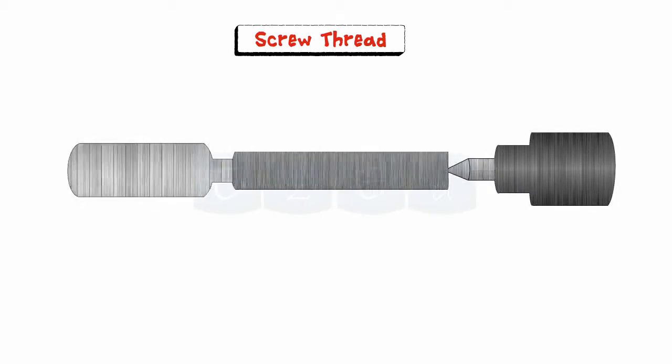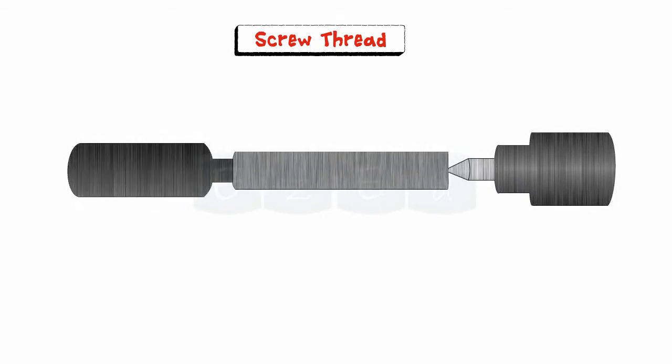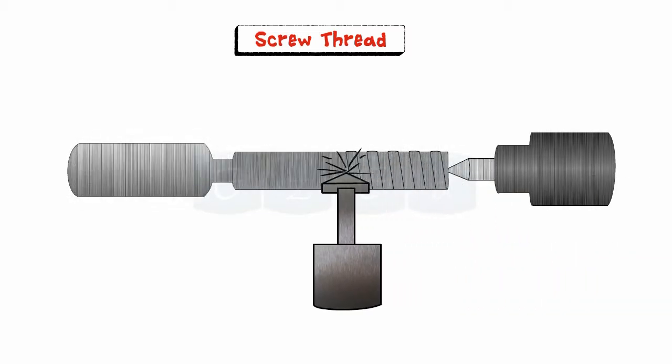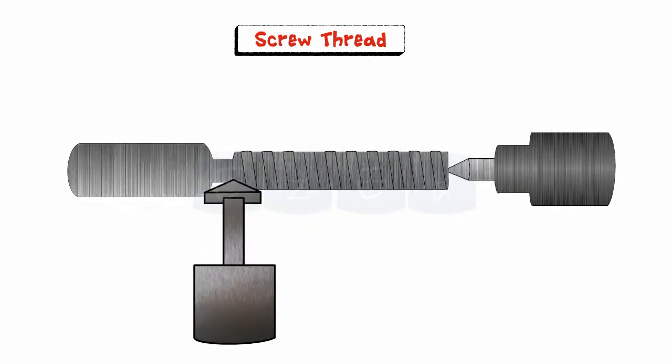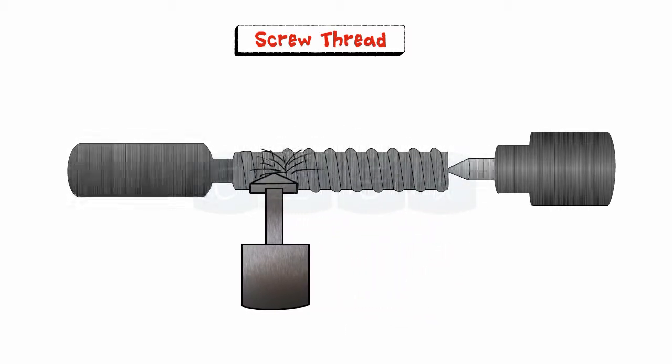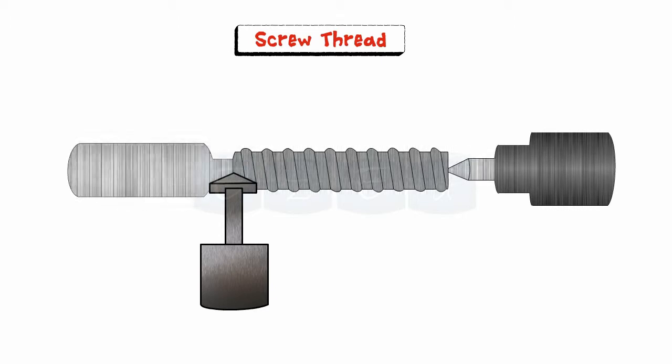Let us see a screw thread. If a cylindrical rod is rotated at a constant speed and at the same time a pointed tool just touching the rod is moved parallel to the axis of the rod at a constant speed, then the cut obtained on the rod will be of continuous and helical form.